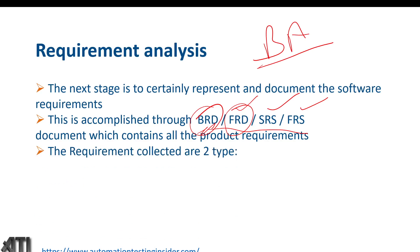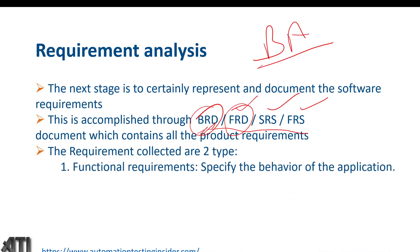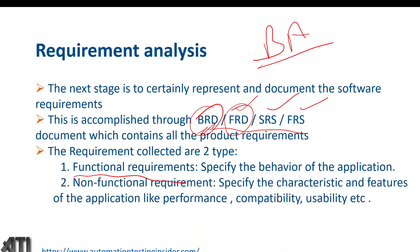Requirements are collected in two types. Functional requirements specify the behavior of the application — how the product will behave. Non-functional requirements specify the characteristics and features of the application, like performance, compatibility, usability, and security. We need to capture both functional and non-functional requirements in our documents. We'll talk about performance testing, compatibility testing, and usability testing going forward.